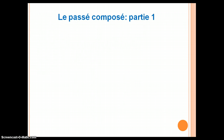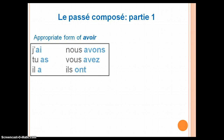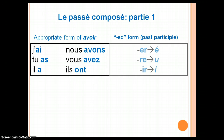Le passé composé, Partie 1. To create stage 1 of the passé composé, you need the appropriate form of avoir and the past participle form of your verb. To create the past participle, you take the infinitive and change: er to é (accent aigu), re to u, and ir to i.